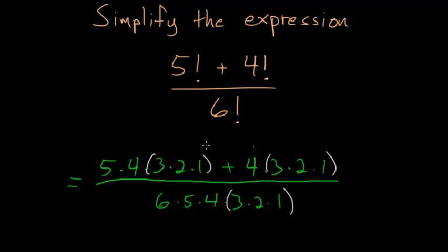And since it is in each of these terms, we can divide both of them by it. So it would cancel out with the 3 times 2 times 1 in the denominator.